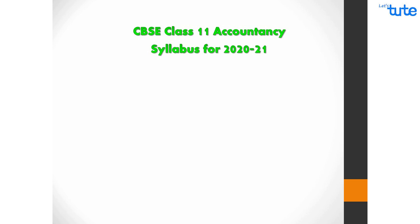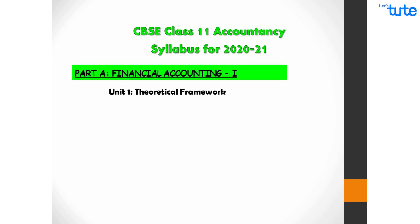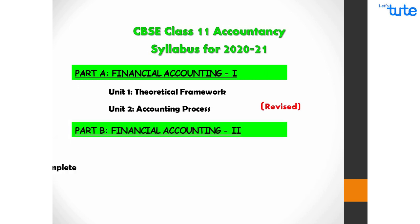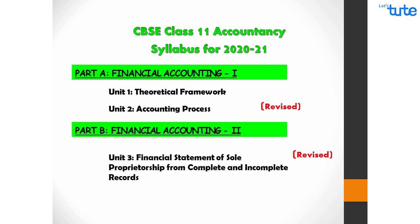Let us first overview the syllabus of Accountancy for CBSE Class 11 for the year 2020-21. It is divided into two parts. Part A consists of Unit 1 Theoretical Framework and Unit 2 Accounting Process. Part B consists of Unit 3 Financial Statements of Sole Proprietorship from Complete and Incomplete Records, and Unit 4 Computers in Accounting.